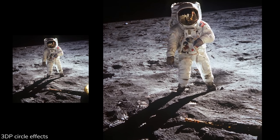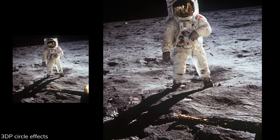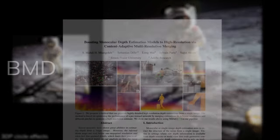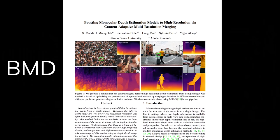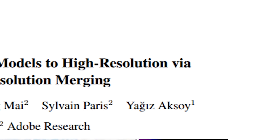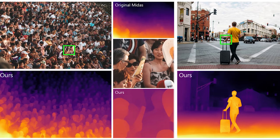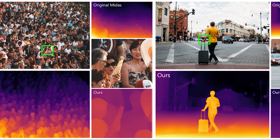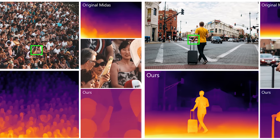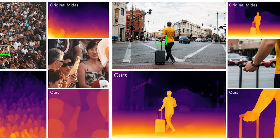The reason I'm bringing 3DP back up again today is actually because of the release of this mind-blowing paper called BMD, short for Boosting Monocular Depth Estimation Models to High Resolution via Content Adaptive Multi-Resolution Merging. It's a pretty straightforward paper, along with some really impressive techniques to accurately estimate the depths of a single monocular image.